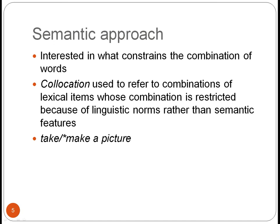In a semantic approach, researchers are interested in what constrains the combination of words. Collocation here refers to combinations of lexical items whose combination is restricted by linguistic norms, rather than any semantic features. So the fact that we say 'take a picture' rather than 'make a picture' isn't determined by semantic features — there is no semantic reason why 'take' is used rather than 'make', and indeed in other languages such as German, it's a verb equivalent to 'make' that is used here.